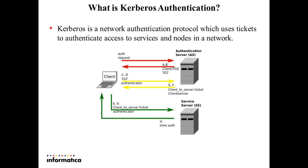What is Kerberos authentication? Kerberos is a network authentication protocol which uses tickets to authenticate access to users and nodes in the network. Kerberos uses a Key Distribution Center to validate identities of users and services and to grant them tickets to authenticate themselves. In this protocol, users and services are known as principals. The KDC has a database of principals and their associated secret keys that are used as proof of identity. Kerberos can use an LDAP directory service as a principal database.